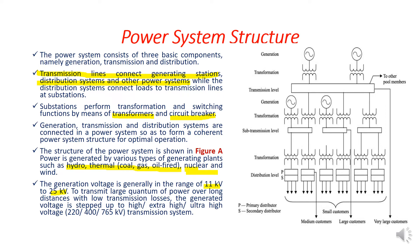To transmit large quantum of power over large distances with low transmission losses, the generated voltage is stepped up to high, extra high, or ultra high voltages. In the transmission system, the power loss is equal to I²R. If the current is increased, the power loss also increases. But if the voltage is increased, simultaneously the current will be reduced. So if we increase the voltage to a very high level, the current will be reduced, and automatically the power loss is also reduced.